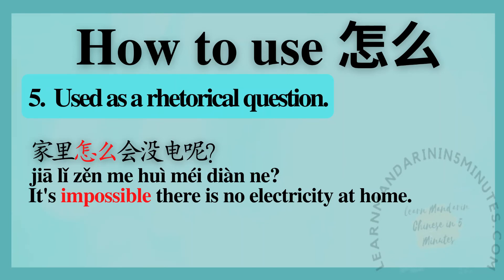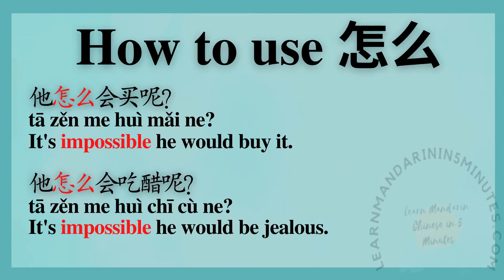Number five: used as a rhetorical question. Sentence examples. 家里怎么会没电呢? — It's impossible, there is no electricity at home. 他怎么会买呢? — It's impossible, he would buy it. 他怎么会吃醋呢? — It's impossible, he would be jealous.